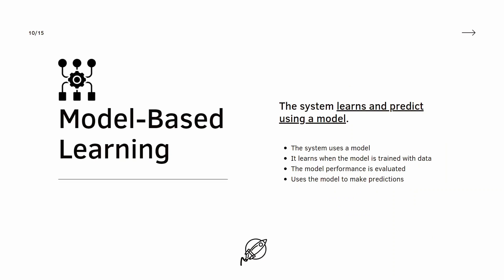This system uses a model to learn from all available data and predicts the new data. This is, we take a model and train it with data. After the training, we evaluate if the model's performance is as we desired. And in the final step, we use that model to make predictions.